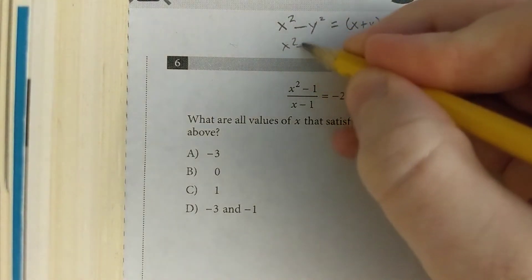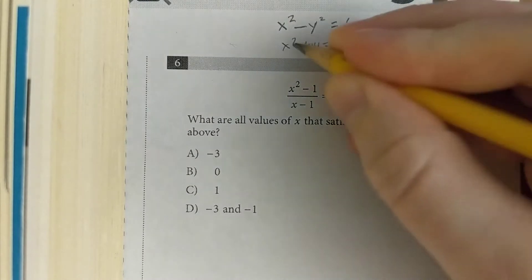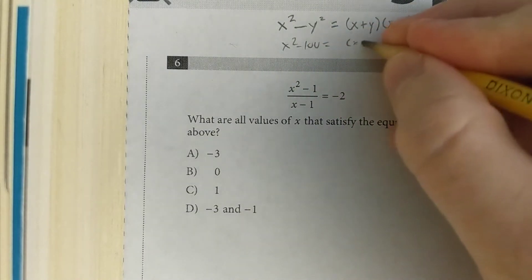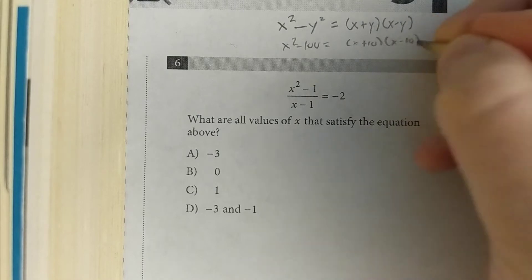For example, if you had x squared minus 100, the square root of x squared is x, the square root of 100 is 10, so that would be (x + 10)(x - 10).